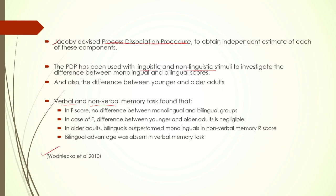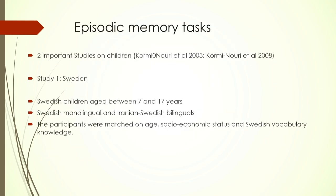Findings from a 2010 study showed that in F score there was no difference between monolingual and bilingual groups, because F score is simpler and does not depend much on executive control - and the difference between older and younger adults in F score was also negligible. In older adults, bilinguals performed better than monolinguals in R score because R memory is more dependent on executive control. However, bilingual advantage was found to be absent in verbal memory tasks.